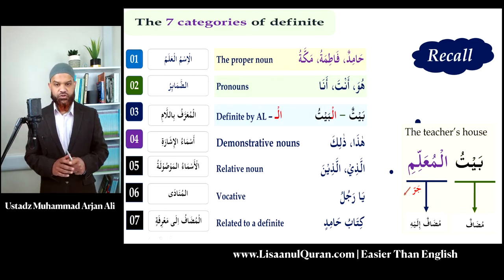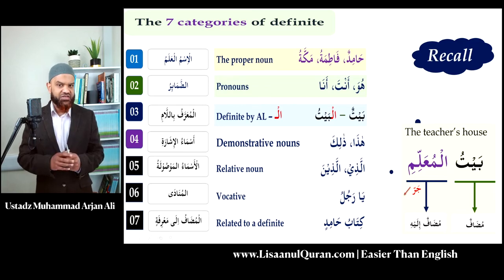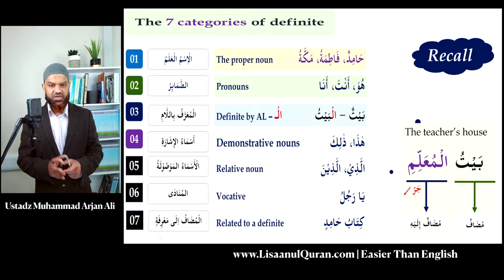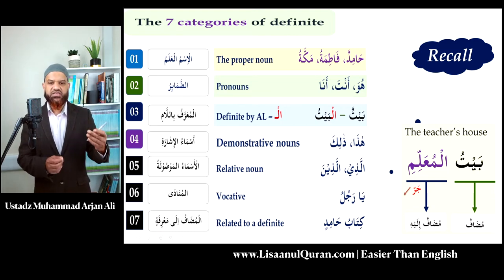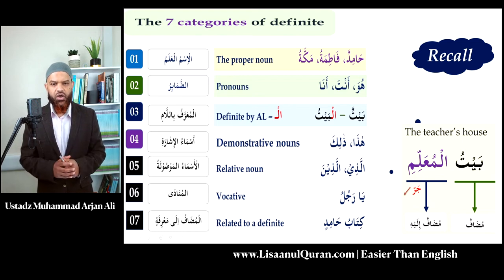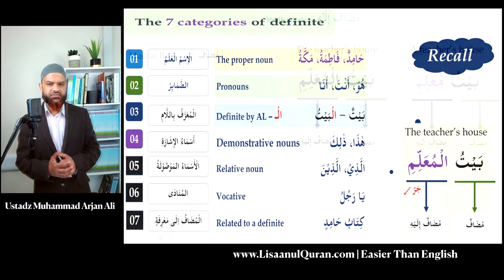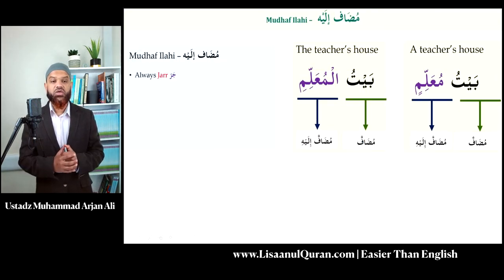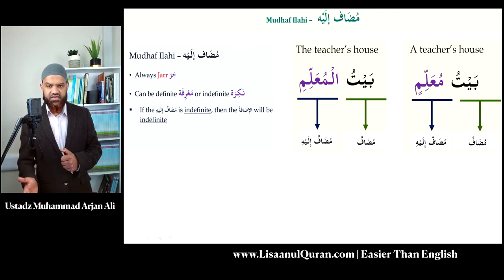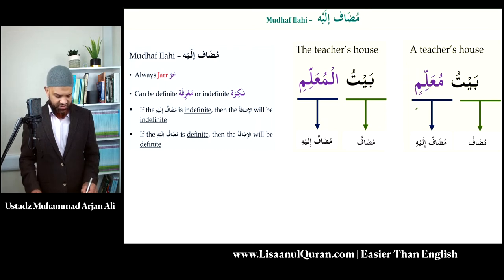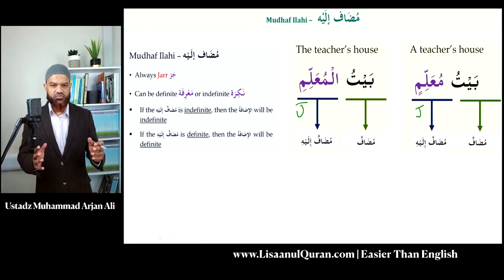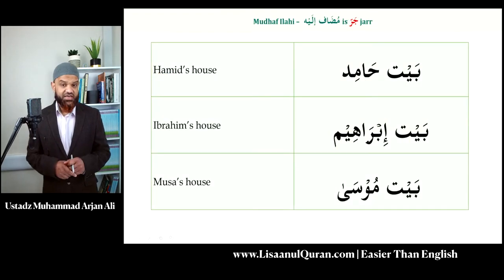I hope that point is now clear, and I hope you realize why I didn't mention the seventh category in lesson two — it would have been confusing then. Now you know: when the mudaf ilaihi is definite, the mudaf is also treated as definite because it is related to something definite. That is your seventh category of definiteness. To summarize the mudaf ilaihi rules: it is always jar, it can be definite or indefinite, and the definiteness of the mudaf ilaihi determines the definiteness of the whole construct.